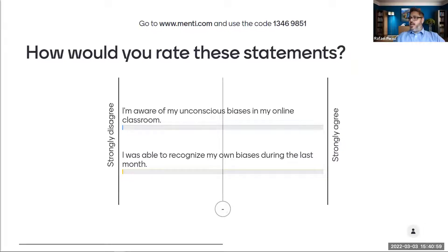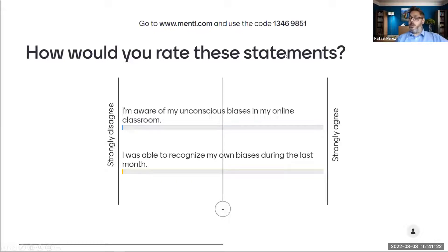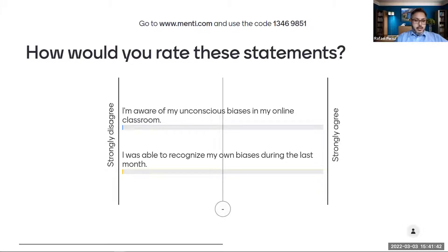Now if we go back into Mentimeter — hopefully this time it is working. Let's try going into menti.com and using the code 13469851. Please rate these two statements on a scale from strongly disagree to strongly agree: first, 'I am aware of my unconscious biases in my online classroom,' and second, 'I was able to recognize my own biases recently.' I'll include the direct link in the chat — this is completely anonymous.